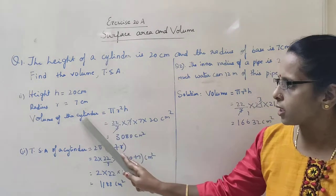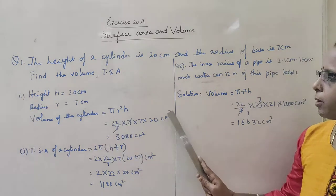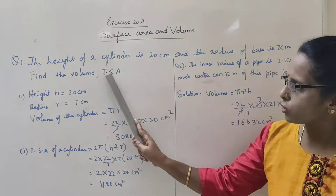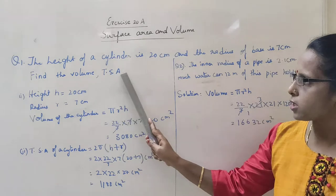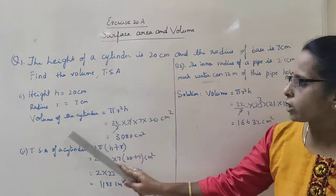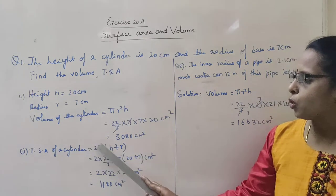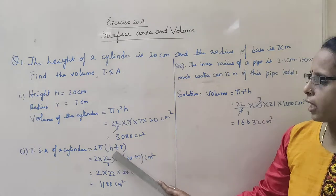See, the volume of the cylinder, always the units will be written in cm square. Now let us move on to the next one, that is total surface area of the cylinder. Total surface area of the cylinder is 2 pi r into height plus radius.